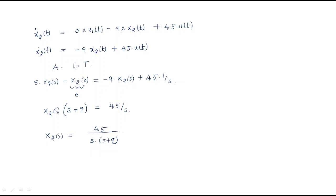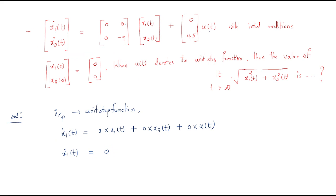Therefore X2(s) = 45 / [s·(s+9)]. The question asks to find limit as t→∞ of √(x1(t)² + x2(t)²).